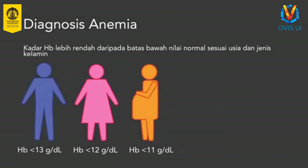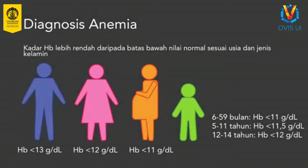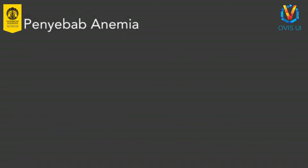Untuk ibu hamil adalah 11 gram per desiliter. Pada anak-anak batas nilai hemoglobin berbeda sesuai dengan usianya. Anak berusia 6-59 bulan memiliki batas bawah nilai Hb 11 gram per desiliter. Sementara usia 5-11 tahun adalah 11,5 gram per desiliter, dan untuk usia 12-14 tahun adalah kurang dari 12 gram per desiliter.